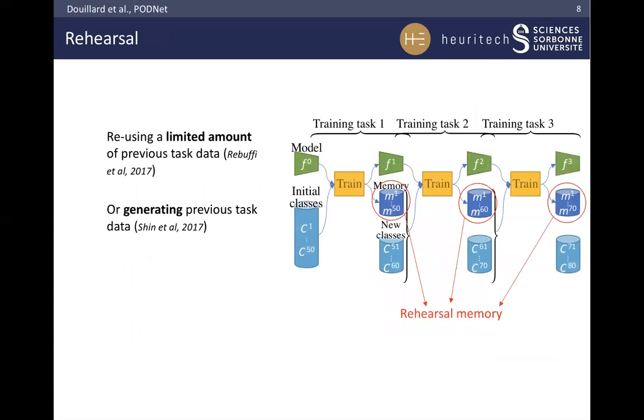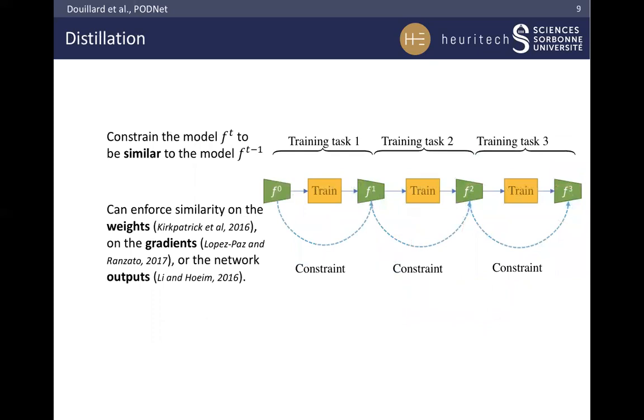To reduce catastrophic forgetting, we can also replay the previous class data in our rehearsal learning setting. We can either store a few images per class, or we can generate the previous distribution with a GAN. Finally, many methods try to reduce the distance between the previous and current model in a distillation scheme. By doing so, we reduce the forgetting.